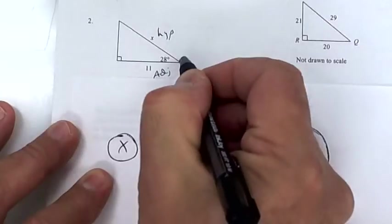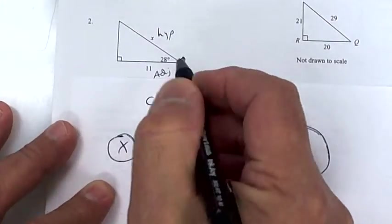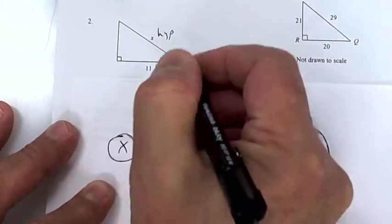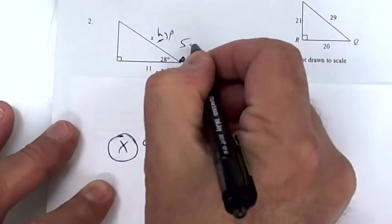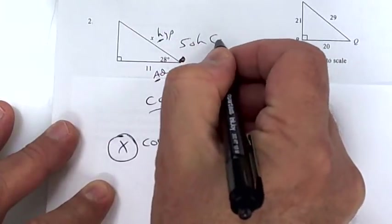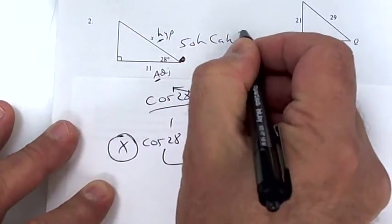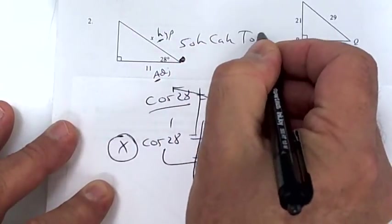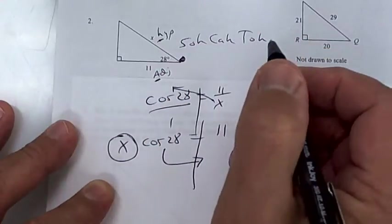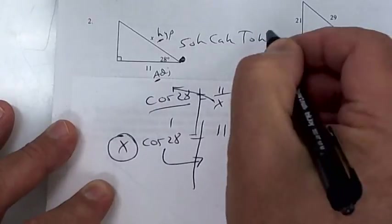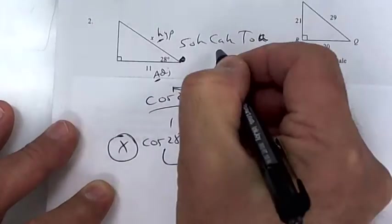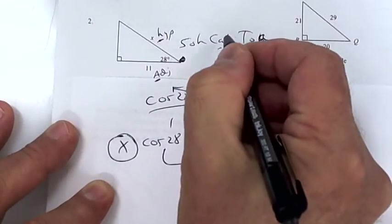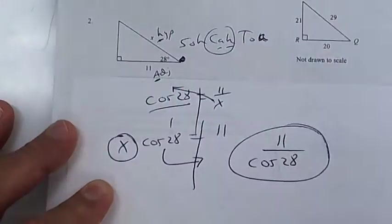Because if you're standing here, it's an A and an H. So it's SOH-CAH-TOA, and the A and the H would be cosine. Does that make sense?